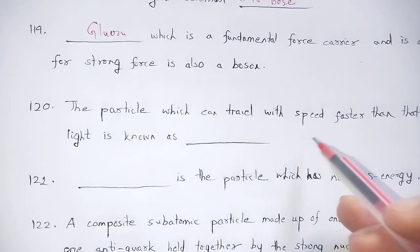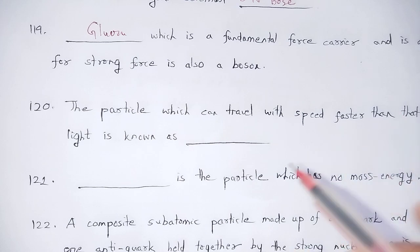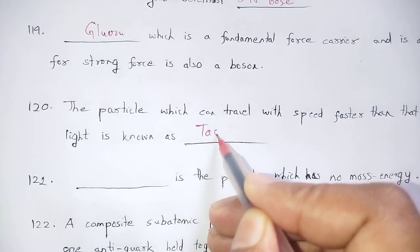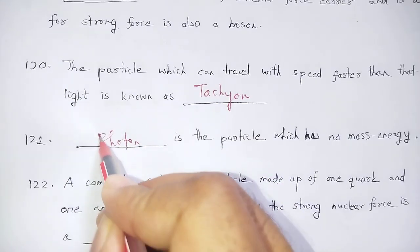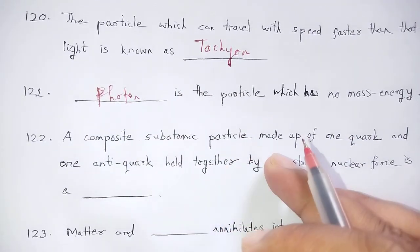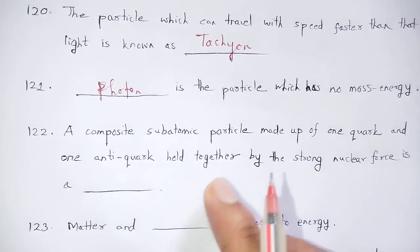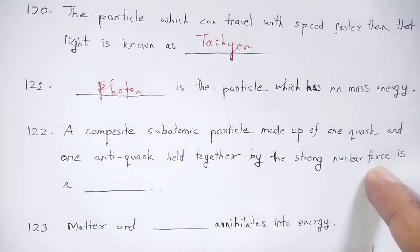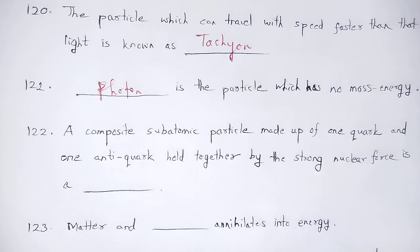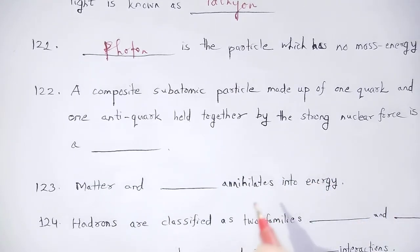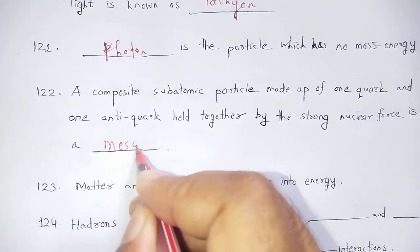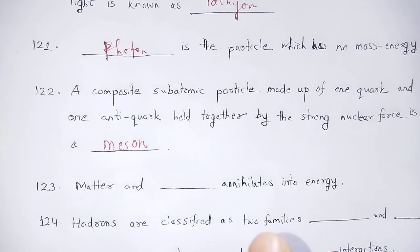The particle which can travel with a speed faster than that of light is known as a tachyon. A composite subatomic particle made up of one quark and one anti-quark held together by the strong nuclear force is called a meson.